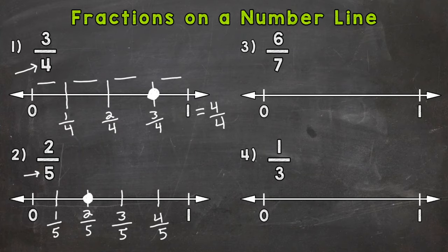On to number three, where we have six-sevenths. So let's cut into sevenths. One, two, three, four, five, six, and seven. So we have seven equal pieces.